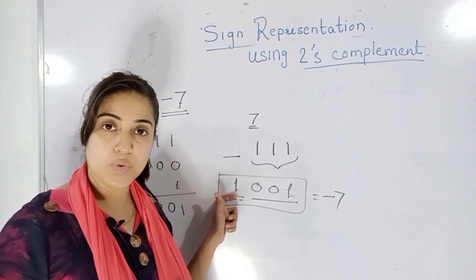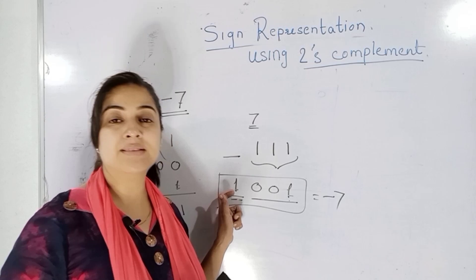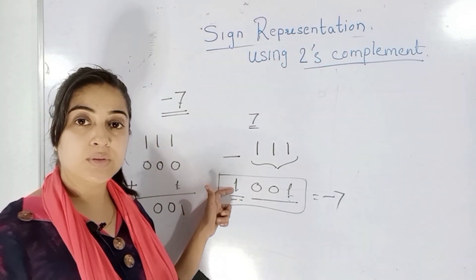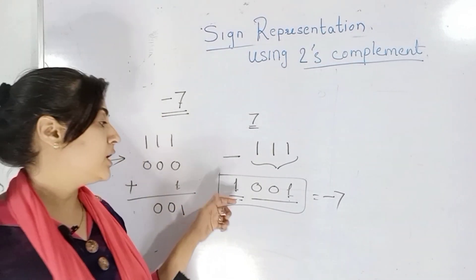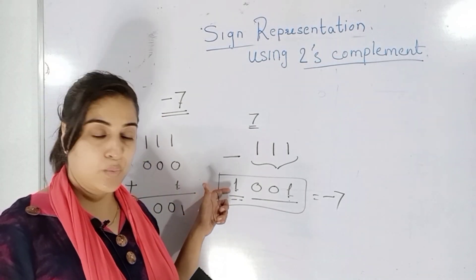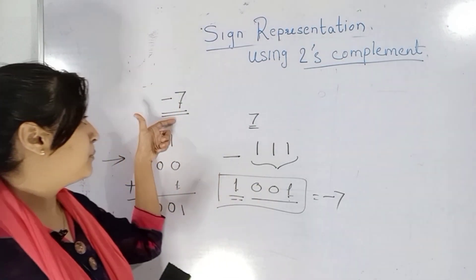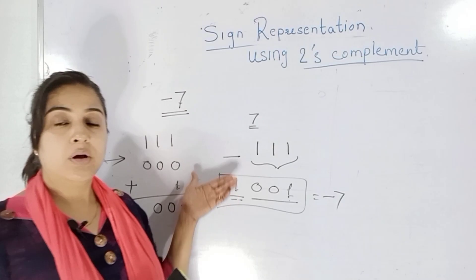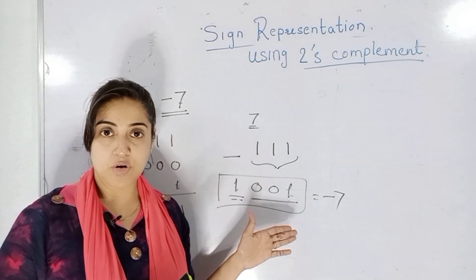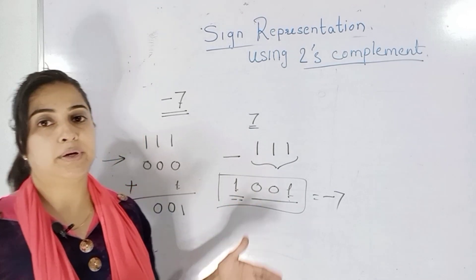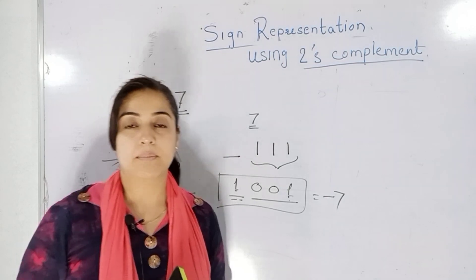The MSB plays a very important role because it is the sign bit. If the MSB is 1, it means the number is negative. If the MSB is 0, the number is positive. To represent any negative number, always write its MSB as 1, and the rest of the bits are magnitude bits. Whatever negative number you want to represent, write that number in binary form and then take the 2's complement of that number, and you will get the signed representation in 2's complement method.